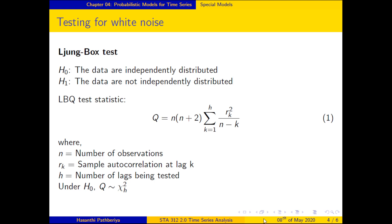The Ljung-Box test statistic follows a chi-square distribution with degrees of freedom equal to H. For example, if H = 12, the statistic follows χ²(12). When given a dataset, you first identify N, H, k, and Rk, then calculate the test statistic Q. You then find the critical value from the chi-square table based on H and compare it with the calculated Q to make your decision.